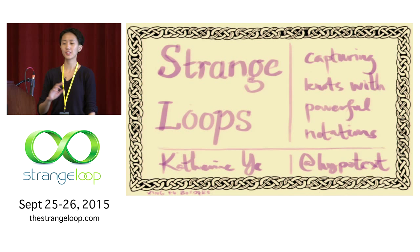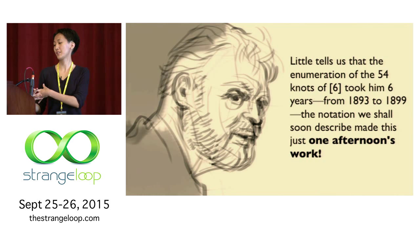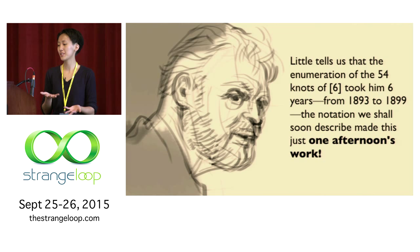Hello everyone. I'm going to be telling you about strange loops, or capturing knots with powerful notations. First off, photos are okay because knots are hard to draw, and that's one of the main points of my talk. This is the hook: we have this quote from mathematician John Conway who says Little tells us that the enumeration of the 54 knots of six took him six years.